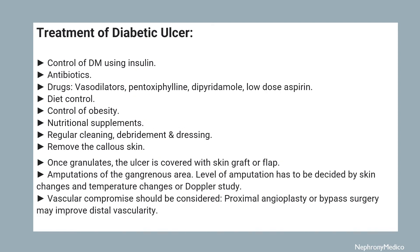Treatment of diabetic ulcer: first, control of diabetes mellitus using insulin should be done. Antibiotics may be given. Drugs like vasodilators, pentoxifylline, dipyridamole, and low-dose aspirin can be given. Diet control and control of obesity, nutritional supplements, and regular cleaning and dressing can be done.